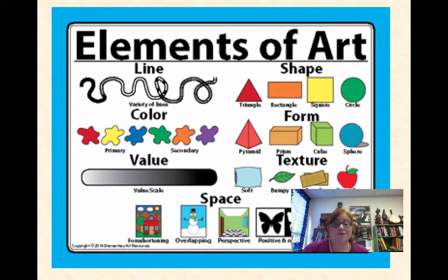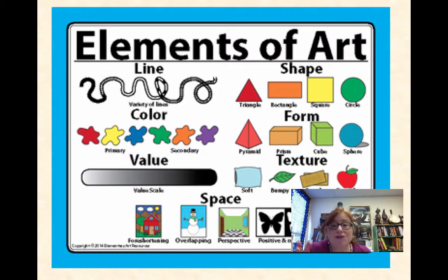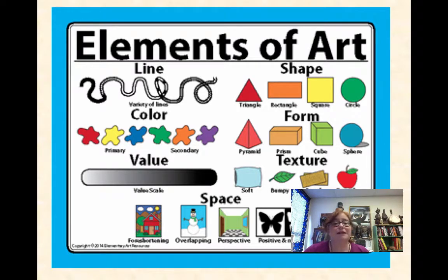The Elements of Art are: line — like a squiggly line you see right there. Lines can be straight, squiggly, dashed, dotted, hatched — all manner of things.